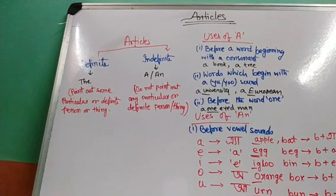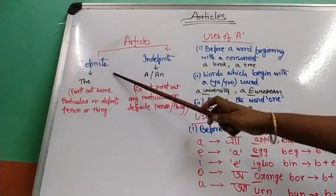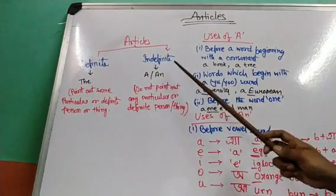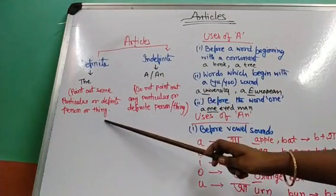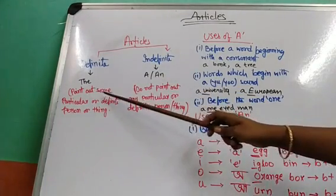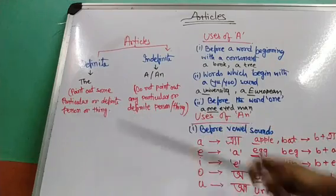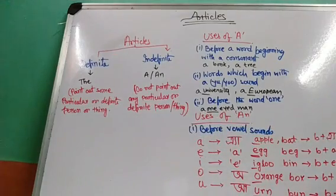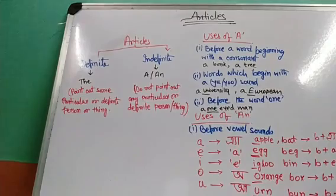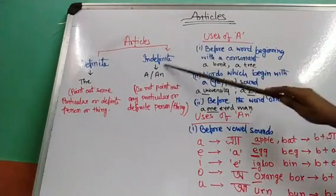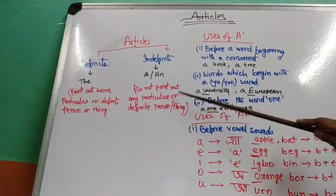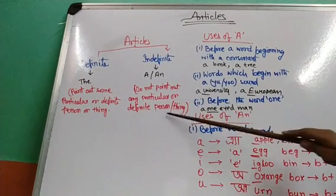Articles can also be classified as demonstrative adjectives because they are used to qualify a noun or a pronoun. Articles are of two kinds: definite articles and indefinite articles. Definite articles are those words which point out some particular or definite person or thing. The word 'the' is a definite article, and 'a' and 'an' are indefinite articles. They do not point out any particular or definite person or thing.